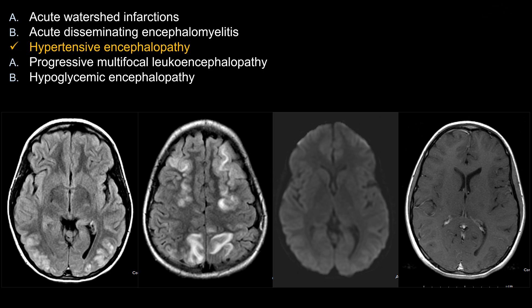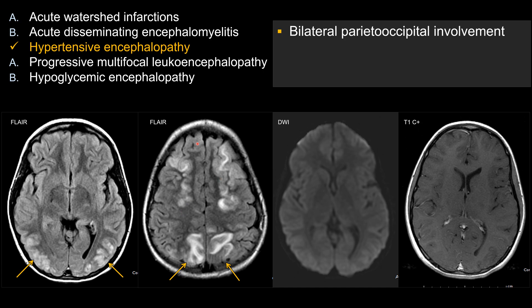The best choice here is hypertensive encephalopathy. On FLAIR sequences, you can see medial involvement of the medial parietal lobe, occipital lobe, and posterior temporal lobe — bilateral, relatively symmetric — involving the cortex and the subcortical white matter.